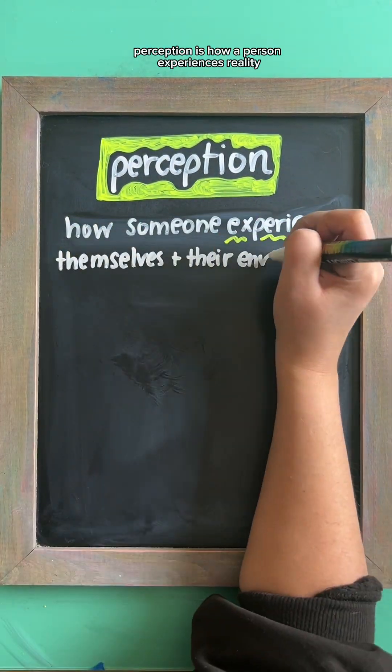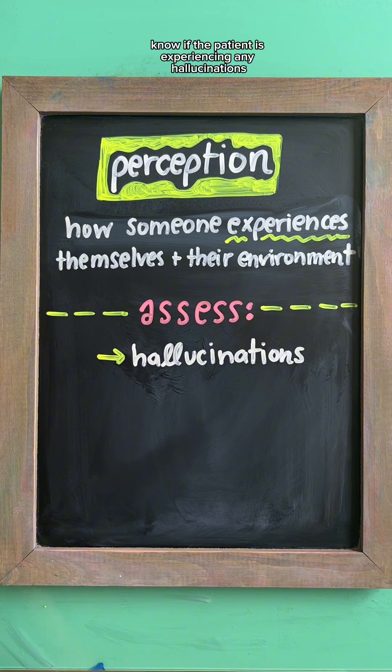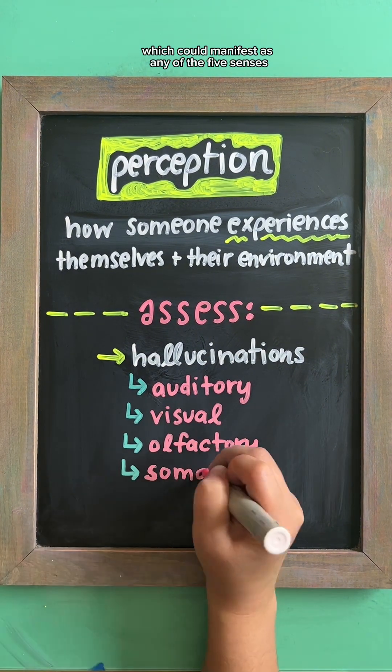Perception is how a person experiences reality. Note if the patient is experiencing any hallucinations, which could manifest as any of the five senses.